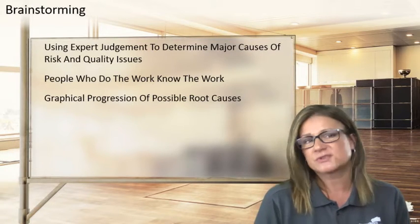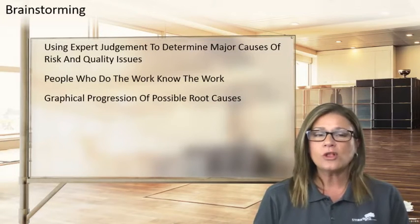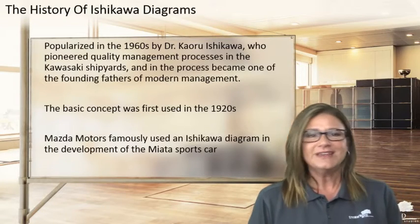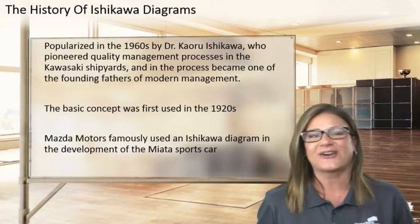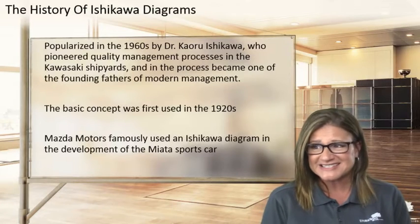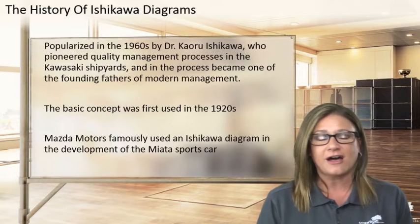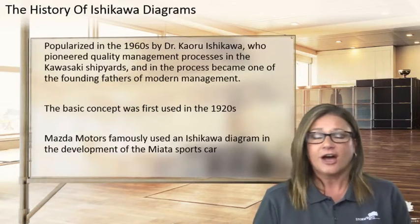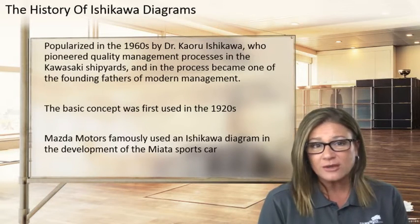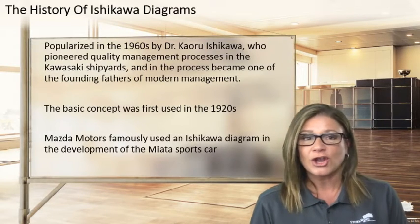There are things like the proximate cause, which is the most obvious, or an intermediate or organizational cause. The fishbone diagram helps you see all the possible categories. It's called an Ishikawa diagram after Dr. Kaoru Ishikawa, who pioneered quality management processes in the 1960s in the Kawasaki shipyards. The process has become one of the foundational pillars of modern quality management, alongside folks like Deming, Juran, Crosby, and Taguchi.